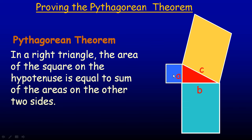Now, each of these squares — this is an A by A square, so its area would be A squared. This lighter blue square here is a B by B square, so its area would be B squared. And this one on the hypotenuse is a C by C square, so its area would be C squared. So algebraically, we're stating that A squared plus B squared, the area of those two squares, is equal to the area of the square on the hypotenuse, C squared.